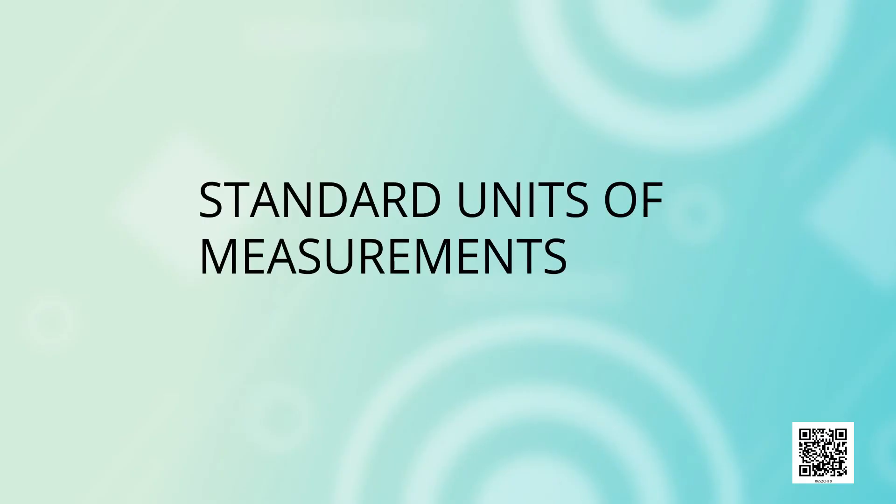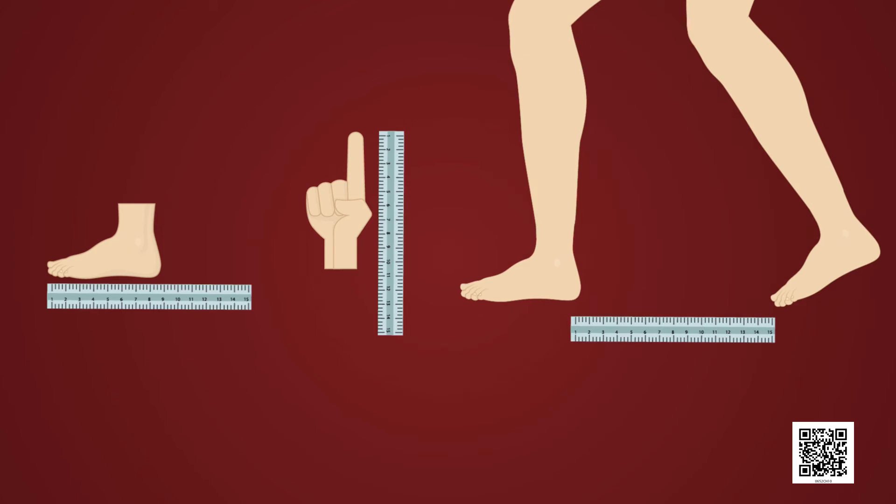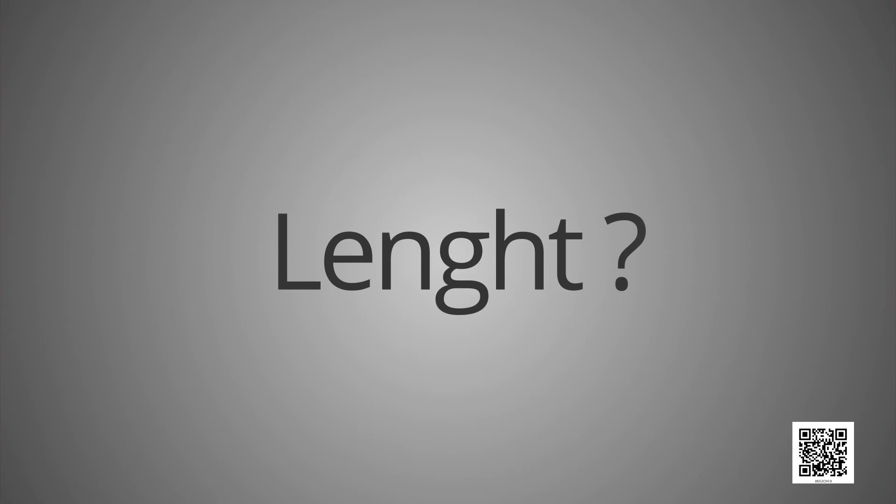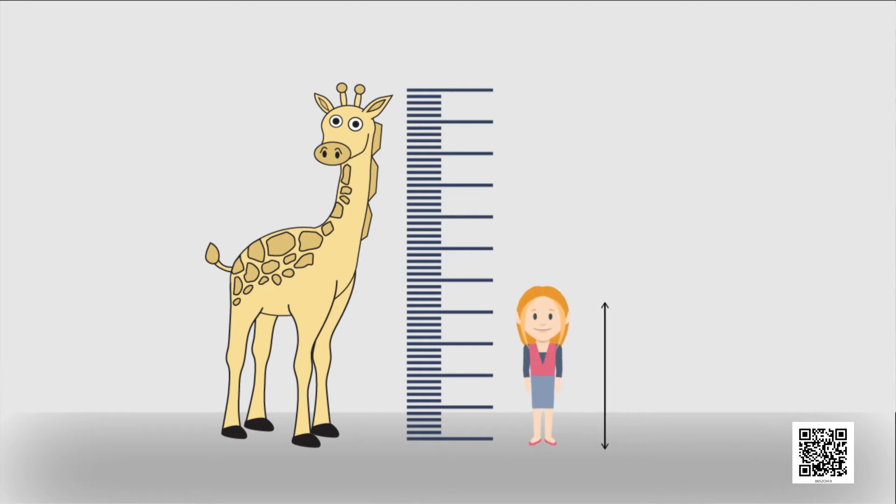Standard units of measurements. In ancient times, the length of a foot, the width of a finger and the distance of a step were commonly used as different units of measurement. Children, do you know what is length? The distance between the first or starting point and the last point of an object is called length.